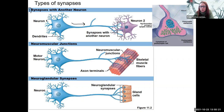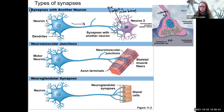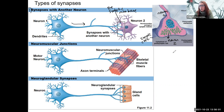We're going to see the presynaptic neuron — so this is neuron one. Here is the presynaptic membrane; it would be the blue right there. And it is synapsing with a postsynaptic neuron, neuron number two, which is going to have a postsynaptic membrane. This type of synapse has what's called a synaptic cleft in between.